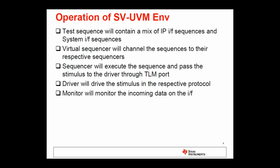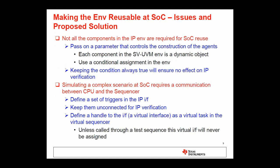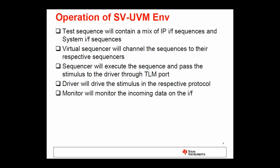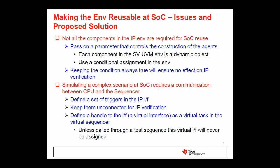The first challenge is making the environment reusable at SOC. Not all components in the IP environment are needed at the SOC — for instance, the system interface agent won't be used at SOC. To handle this, pass a parameter that controls the construction of the agents. UVM has configuration variables used at the construction phase, such as is_active and is_passive. Use a conditional assignment in the environment with these parameters to control agent construction. Keeping the condition always true ensures no effect on the IP verification.